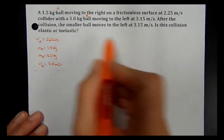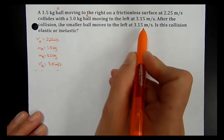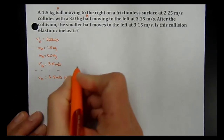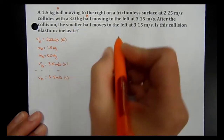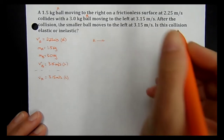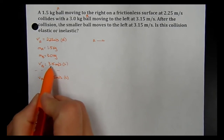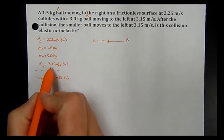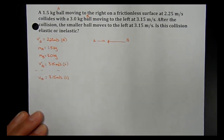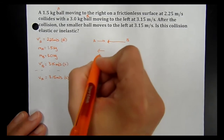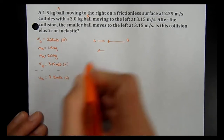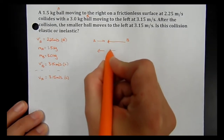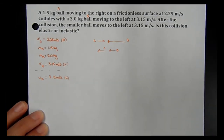After the collision, the smaller ball A moves to the left at 3.15 m/s. Ball A was going to the right, ball B was going to the left. Afterwards, ball A ends up going left. Ball B, which is bigger and was going faster, is probably going to continue going left at some velocity — we'll work out the math.